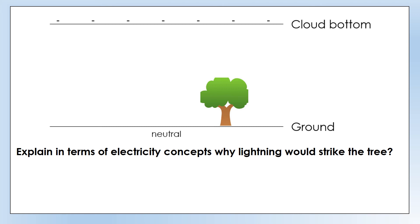Now we're going to look at some conventional wisdom you may have heard: when there's a lightning storm you should go inside, and if you're stuck out in the open you should go to the center of the field — you should definitely not hang out near trees. We're going to try and explain that in terms of electricity concepts: potential difference, current, and resistance. Pause this video and have a crack at explaining why lightning would strike a tree and not just go straight to the ground.